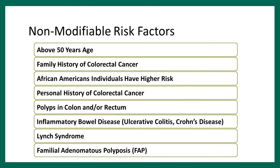Familial adenomatous polyposis, commonly called FAP, is a genetic abnormality where affected family members get hundreds and thousands of polyps in the colon. They start developing polyps in their teenage years, and by age 30, they all develop colon cancer. Fortunately, most have symptoms like bleeding early on; if polyps are found, we remove the entire colon, which prevents colon cancer.